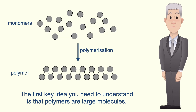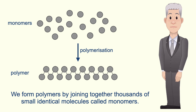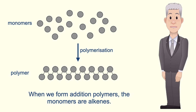The first key idea you need to understand is that polymers are large molecules, and we form polymers by joining together thousands of small identical molecules called monomers. When we form addition polymers, the monomers are alkenes.